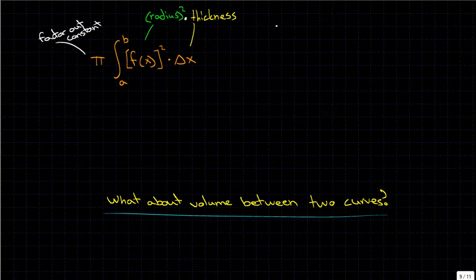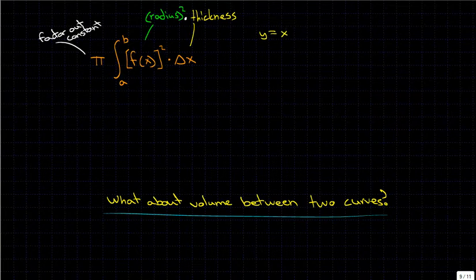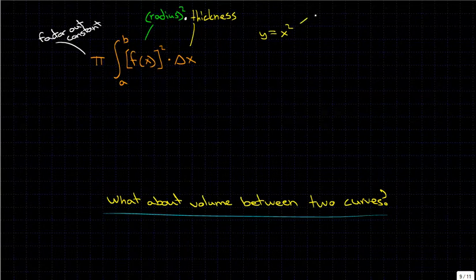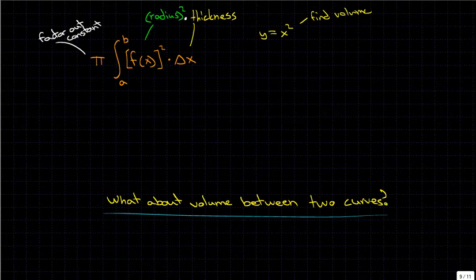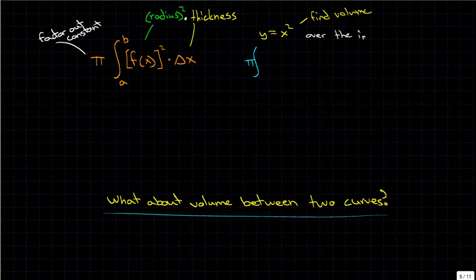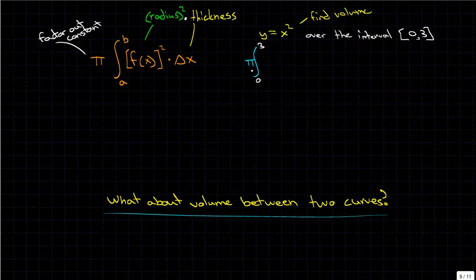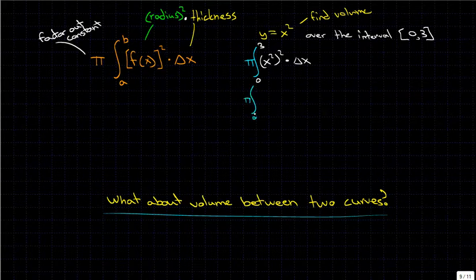Let's do a quick example. If our function was y equals x squared, and we had to find the volume of the solid of rotation of y equals x squared, so find the volume. Then what we would do is we say, okay, so we have, let's put this in integral notation. We have pi, we're going from a to b, and let's assume our interval. Over the interval, say we're going from 0 to 3. Then we go pi from 0 to 3, f of x squared, so we go x squared squared times delta x. And this would equal pi, we go from 0 to 3, so x squared squared equals x to the fourth times dx.